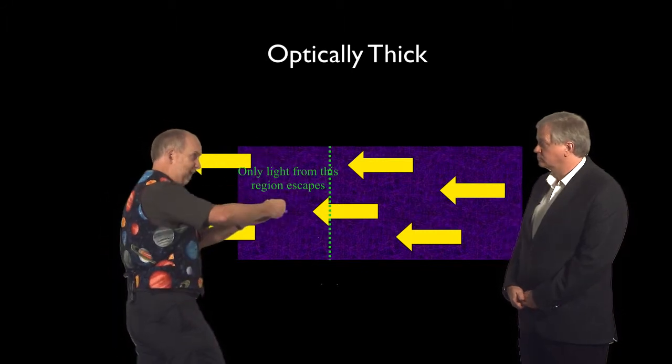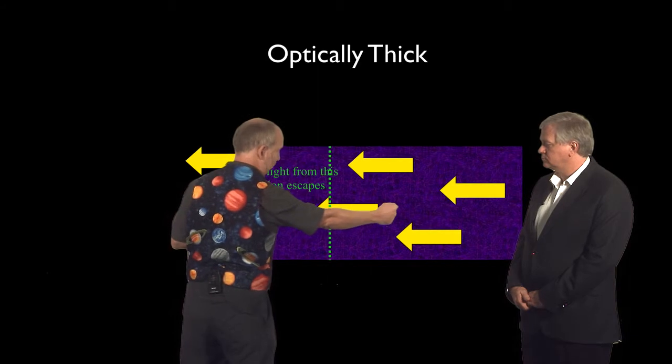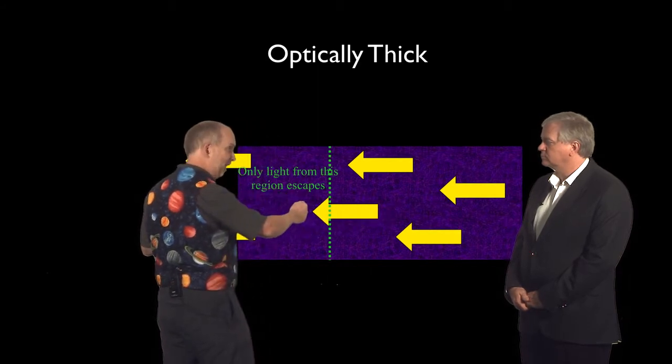If an atom there, an electron jumps down from 3 to 2, the photon can get out. If it does it from here, it will get up as far as there and maybe get absorbed again. Yep.